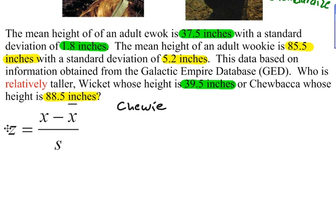Let's find his z-score to see how many standard deviations his height is away from the mean height for all Wookiees. So, here we go. Chewy's z-score is going to be, his data value is 88.5 inches.